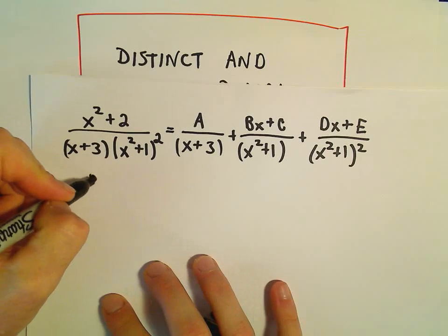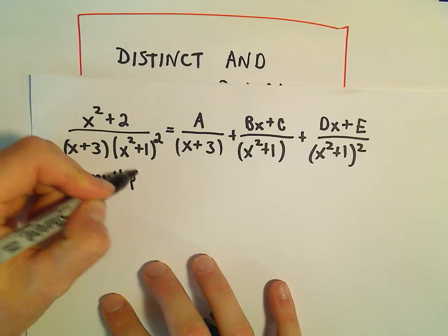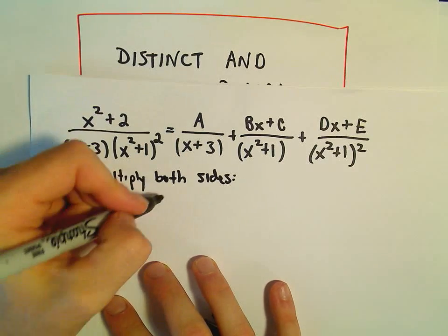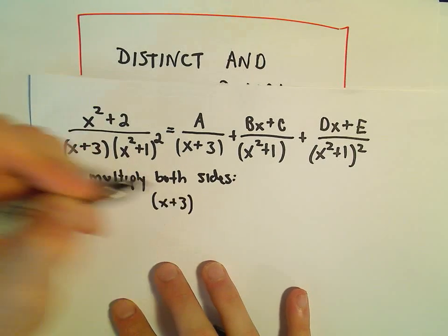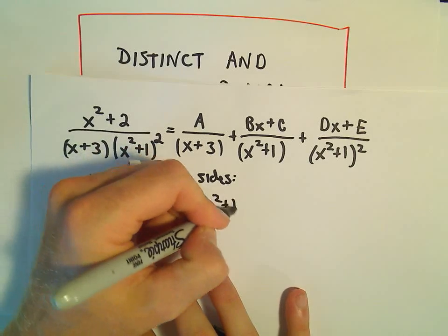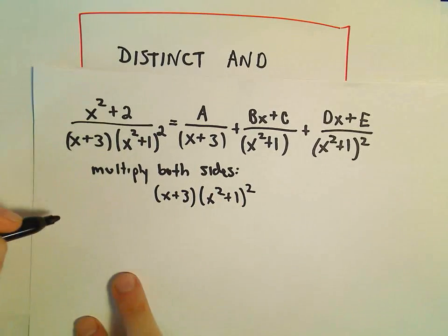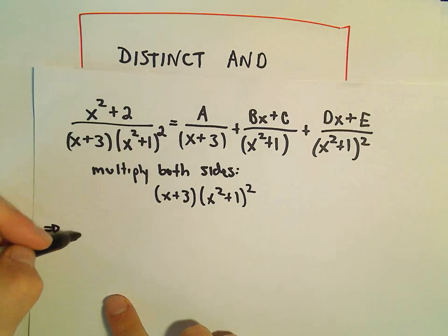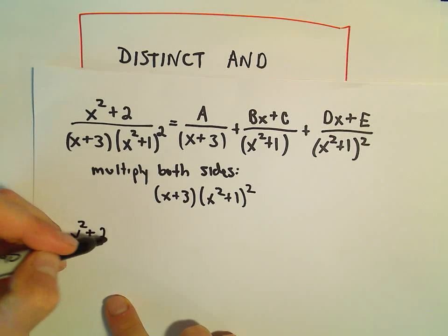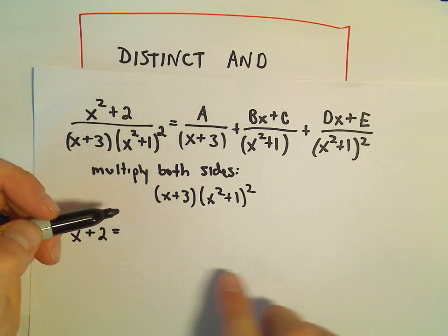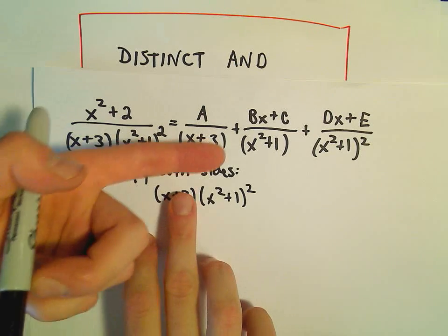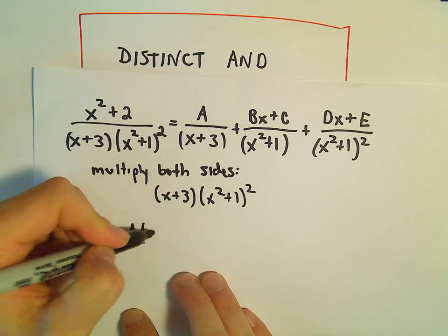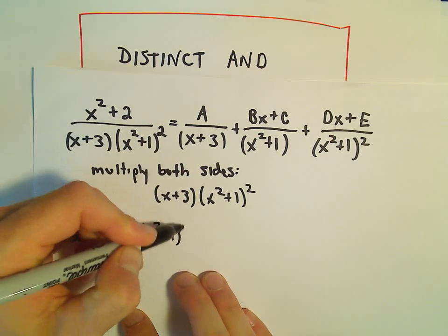The tedious part is figuring out the constants A, B, and C. We multiply both sides by the denominator x plus 3 times x squared plus 1 quantity squared. On the left side everything cancels and we're left with x squared plus 2. On the right, the x plus 3 cancels on the first term, leaving A times x squared plus 1 quantity squared.